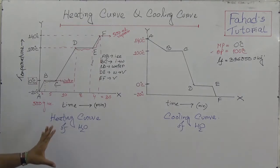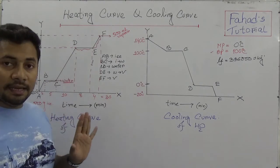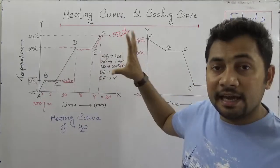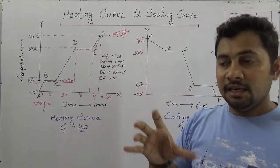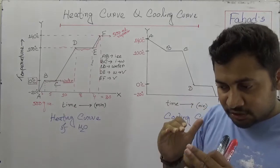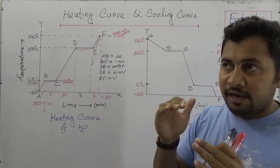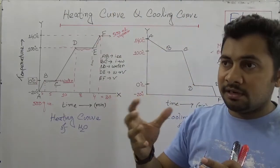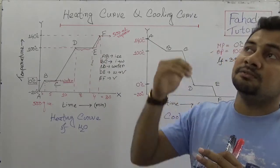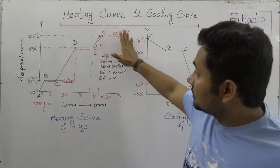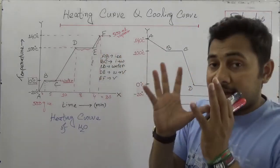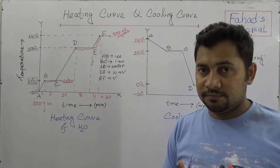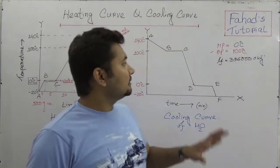I want to give you the understanding of what is exactly happening practically — so that you can understand that if you start giving heat to ice it will turn into water, and after the water receives enough energy it will turn into vapor. All these steps are shown by the lines in the graph. If you understand this, things become easy.